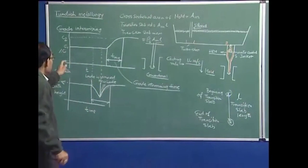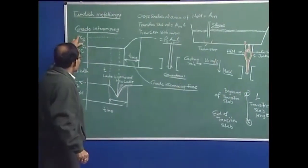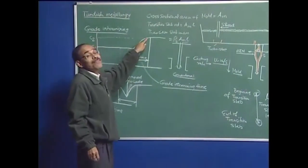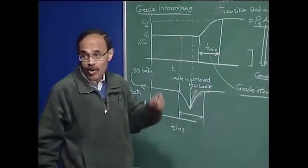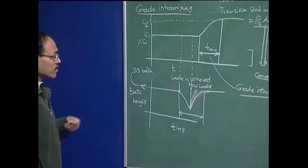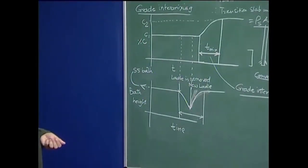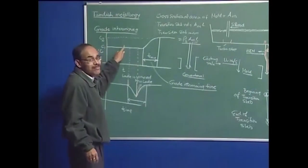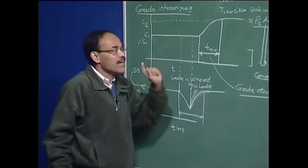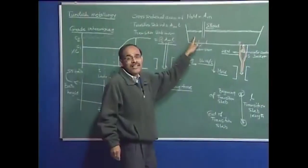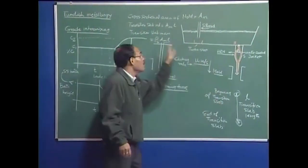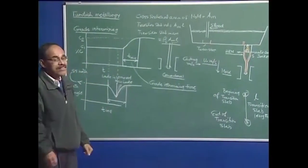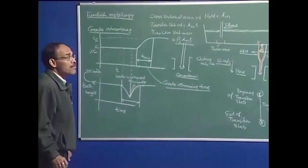How do you generate this concentration-time curve? This can be done by modeling — through mathematical and physical modeling — which we will be discussing in a few lectures. It is possible to generate this curve corresponding to a specific Tundish operation, and thereby make predictions and optimize the process such that the transition slab volume is going to be minimum.